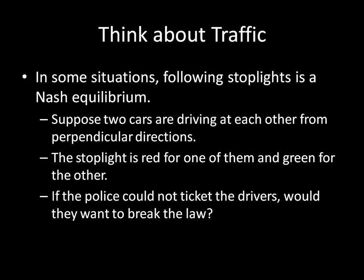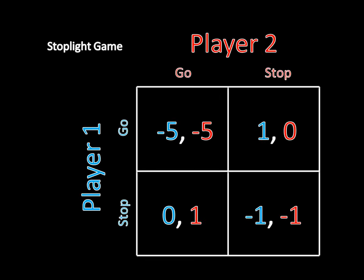We can verify this by looking at the matrix on screen. Both players can either choose to go or stop. If they both go, they crash into each other — a really bad outcome for both. If they both stop, it's awkward because they'll be sitting there waiting for the other one to go. But if one goes and one stops, the person who goes gets to her destination on time in the fastest possible way. And while the player who stops doesn't do as well, he immediately gets to go after the other passes, so it's the second-best outcome.